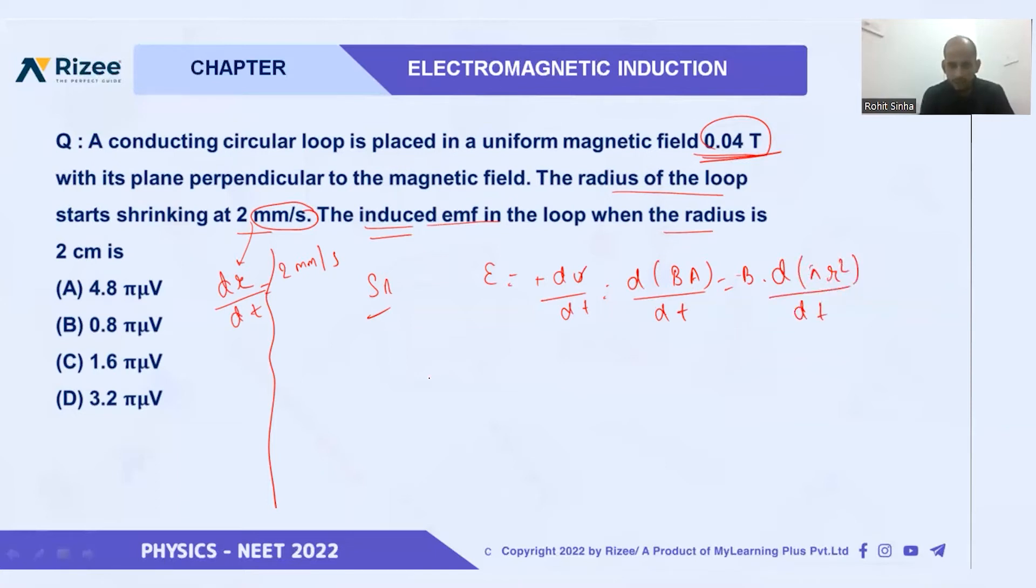What can we write? See here, put the value of B. What is the value of B? B is 0.04. So 0.04 times differentiation of πr². π is constant, we can put π here. Differentiation of r² gives us 2r × dr/dt.